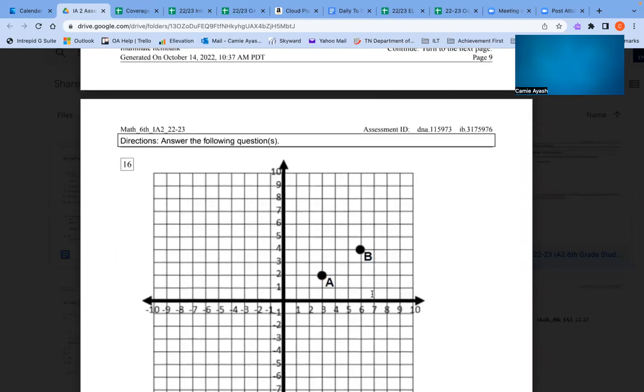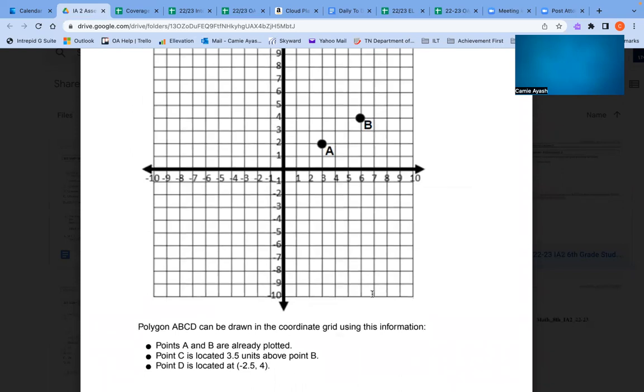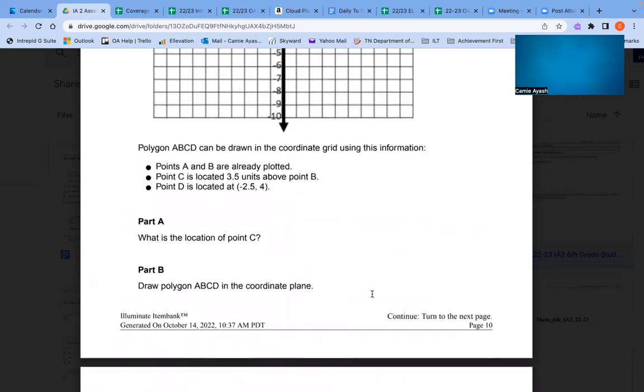Number 16: Polygon ABCD can be drawn in the coordinate grid using this information. Points A and B are already plotted. Point C is located 3.5 units above point B. Point D is located at (negative 2.5, 4). Part A: What is the location of point C? Part B: Draw polygon ABCD in the coordinate plane.